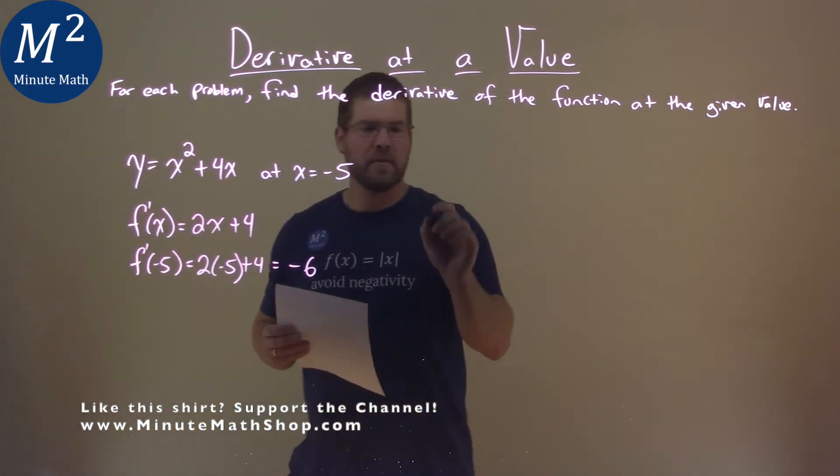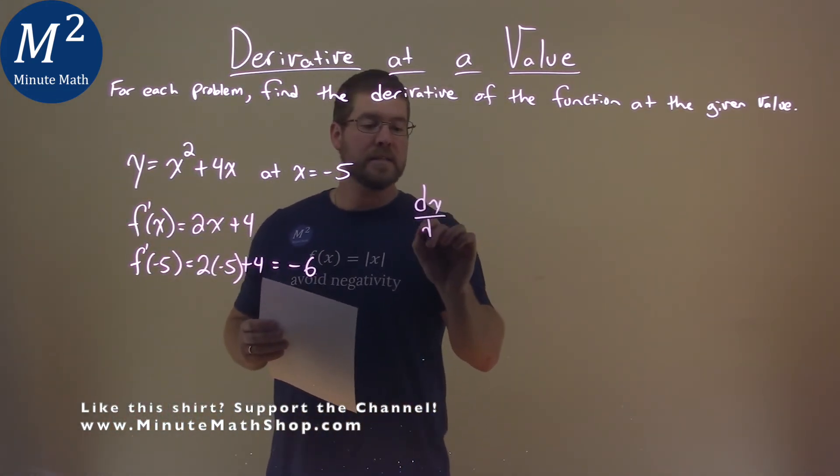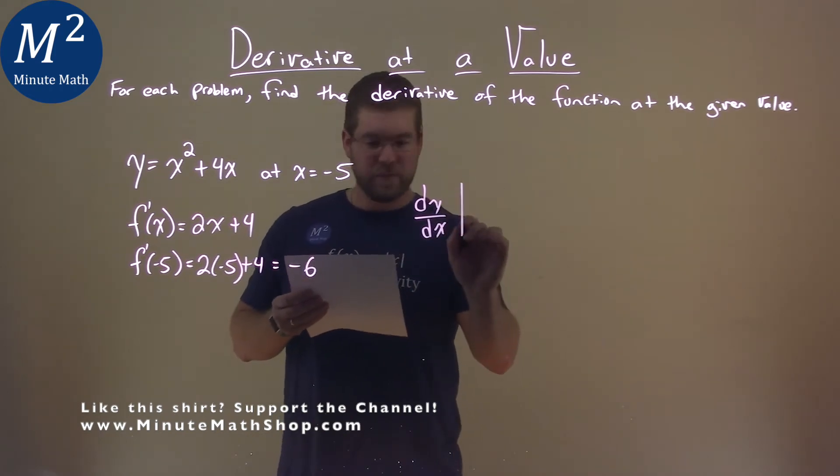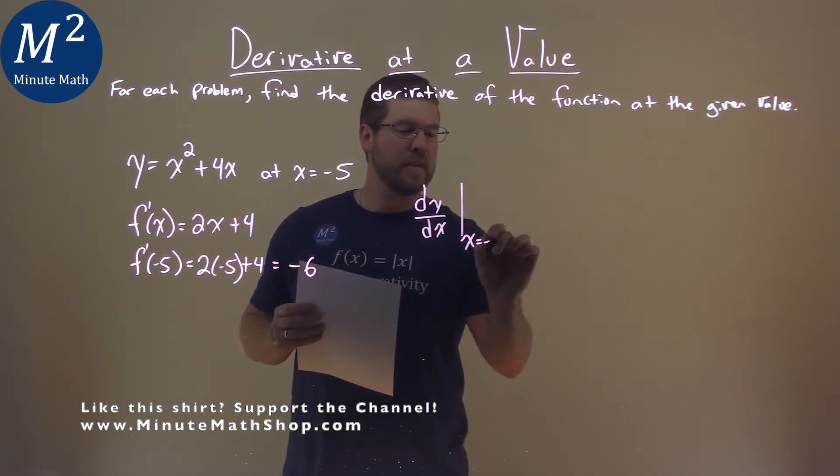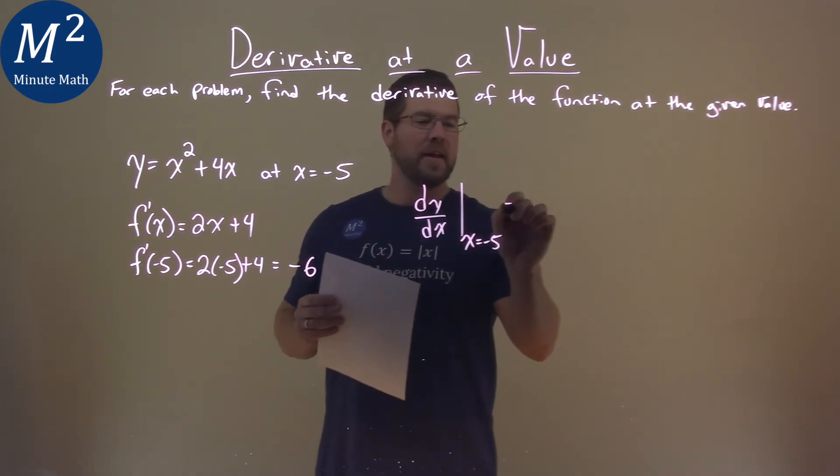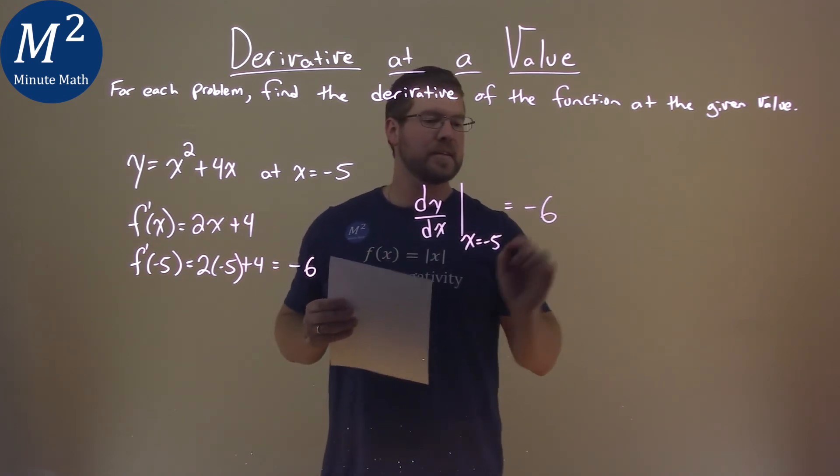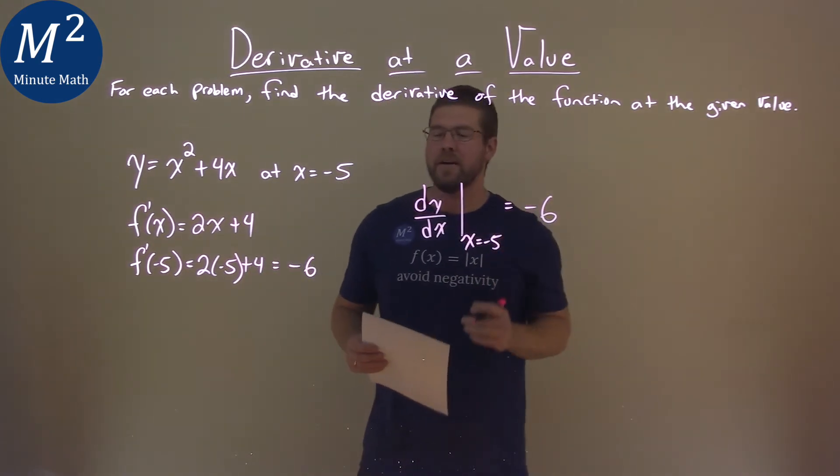So we can write this answer as dy/dx at x equals negative 5, and that equals negative 6. That is our final answer.